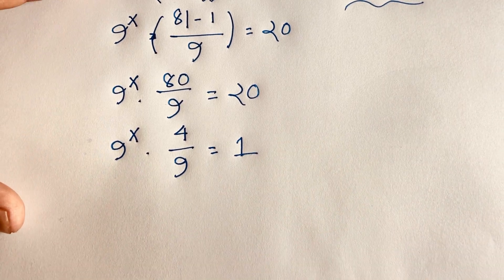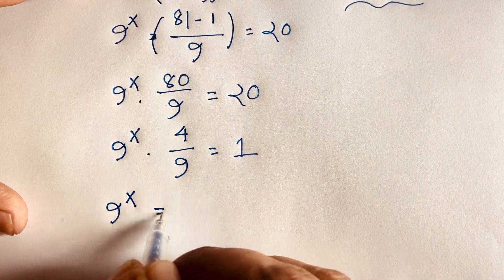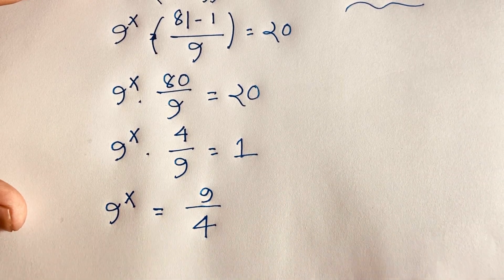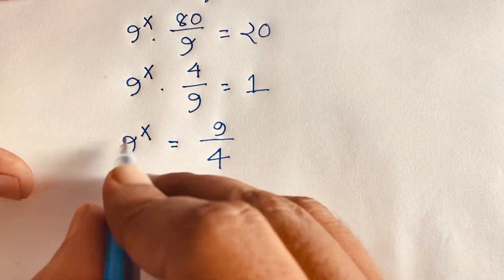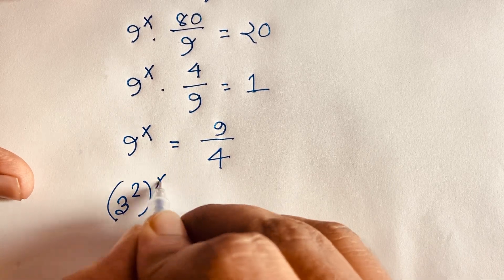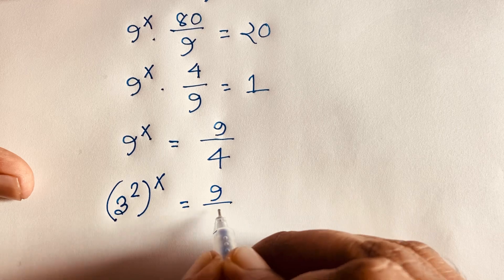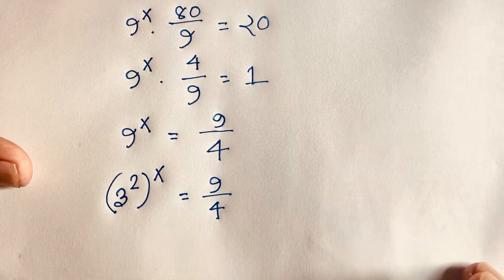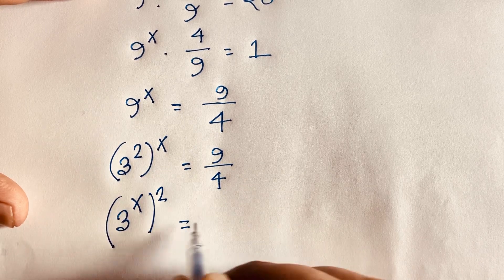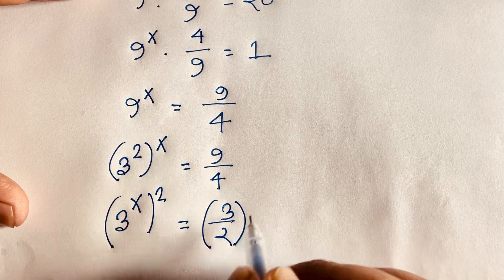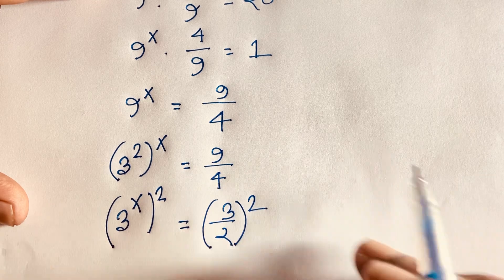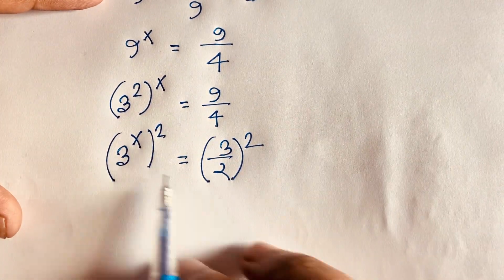So 9 to the power x equals 9 over 4. We rewrite this: 9 is 3 squared, so (3^2)^x equals 9/4, which means (3^x)^2 equals (3/2)^2, since 3 squared is 9 and 2 squared is 4. Since the exponents are the same, the bases must be equal, so 3 to the power x equals 3 over 2.